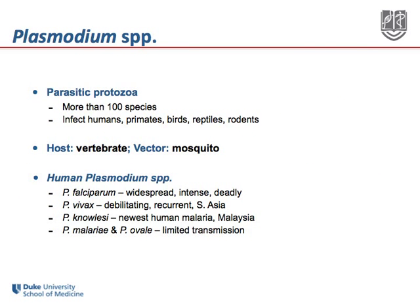Plasmodium species are parasitic protozoa. They are complex eukaryotic pathogens and there are more than 100 species described thus far. They infect humans, non-human primates, birds, reptiles, and rodents.